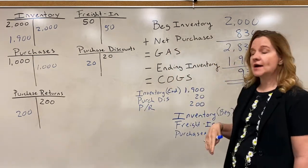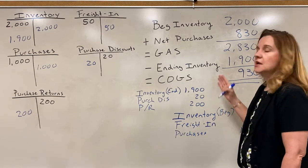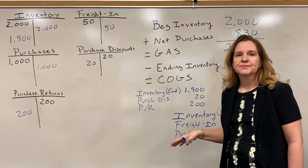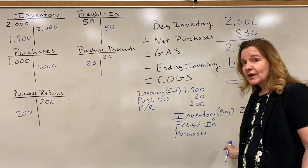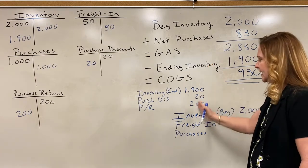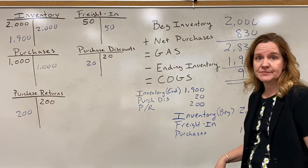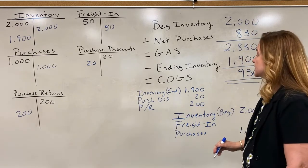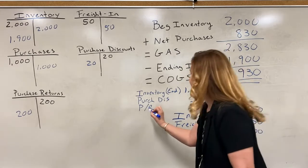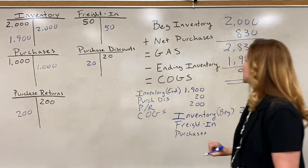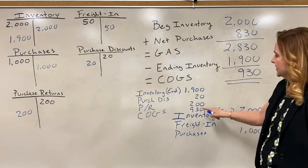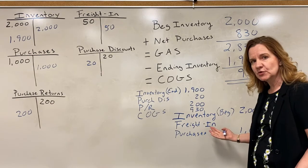Now I'm going to record cost of goods sold. The cost of goods sold is $930 from the calculation, but you can also plug it — debits have to equal credits. If I total up this side, I'll find that this side is off by $930 because I have to record cost of goods sold. So I'm going to debit cost of goods sold for $930. Now if I add this side and add this side, I'm in balance — debits equal credits. That is the period end adjusting entry using the periodic method.